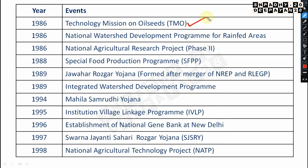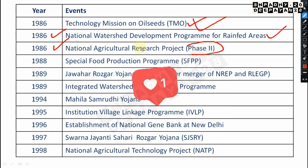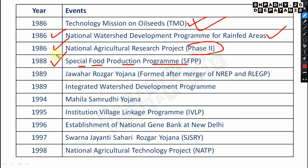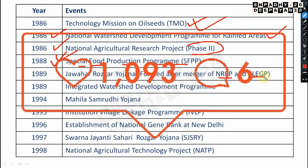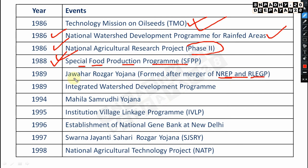In 1986, the Technology Mission on Oilseeds (TMO) was started. The National Watershed Development Program for Rainfed Areas was also started in 1986. The National Agricultural Research Project Phase 2 was started in 1986. The Special Food Production Program (SFPP) was started in 1988. In 1989, Jawahar Rojgar Yojana was formed after merger of NREP and RLEGP. The Integrated Watershed Development Program also started in 1989.